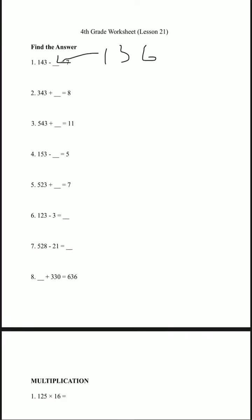And let's do number 2. 343 plus blank equals 8. Let's say 143 plus x equals 8. To make x by alone, subtract 143 from both sides.